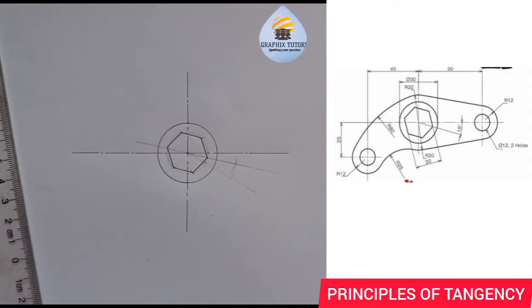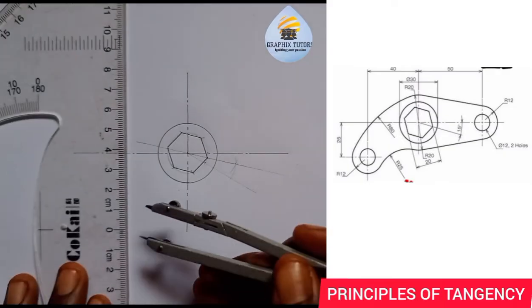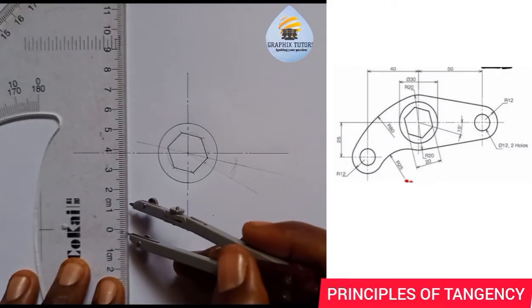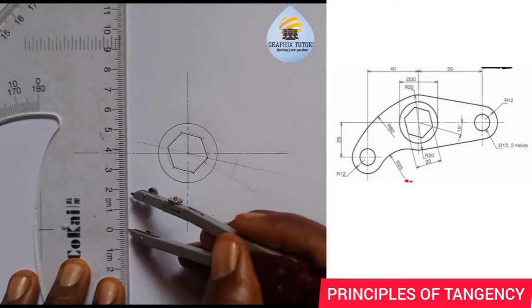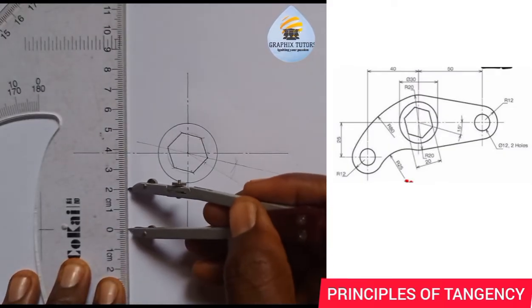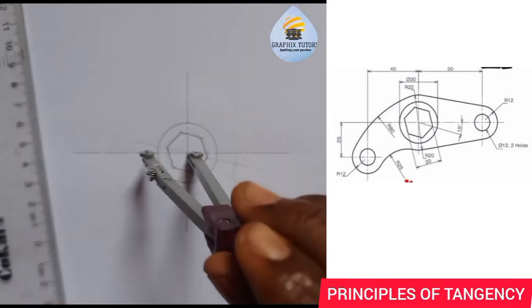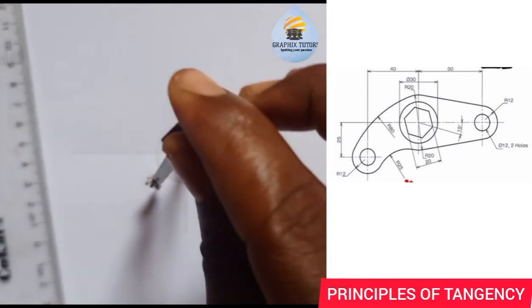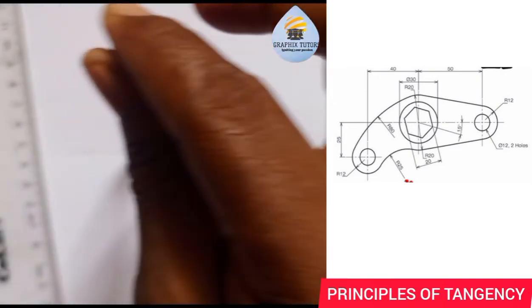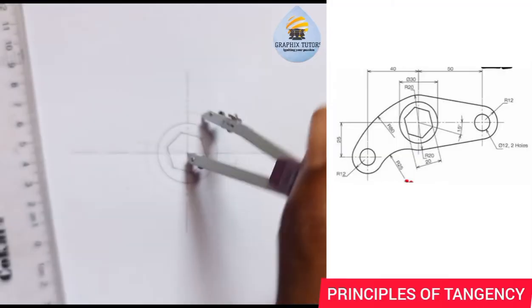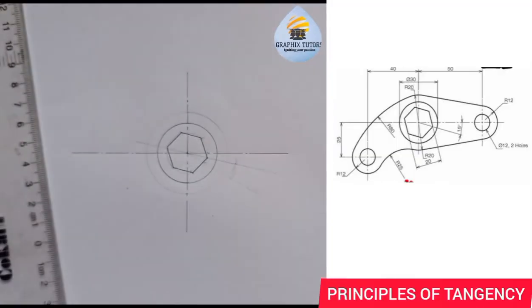I'm going to draw a circle which has the radius of 20. I'll measure 20 on my meter rule again from zero to 20, already at the center, and draw this — but I'll be using a faint line.